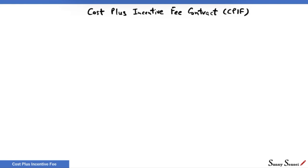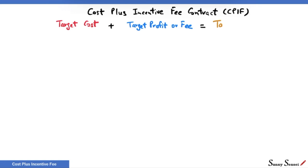As in most contracts, this contract starts with estimates. Target cost is the estimated cost. Estimated seller's profit is the target profit, also called the target fee. Target fee is normally given as a percentage of target cost. Adding these two gives us the estimate of price — the target price. If target cost is $100 and target fee is 10% of the target cost, or $10, the target price is $100 plus $10, or $110.